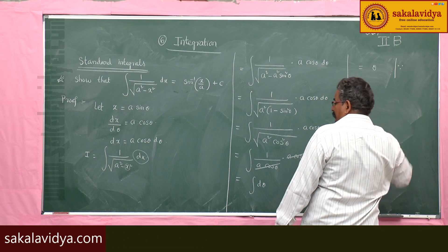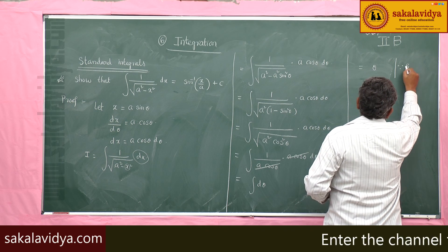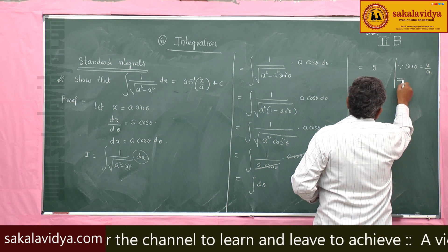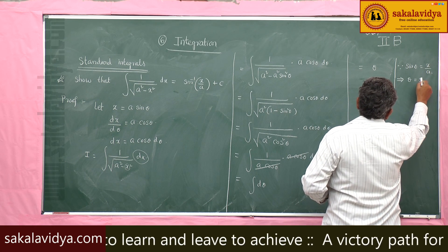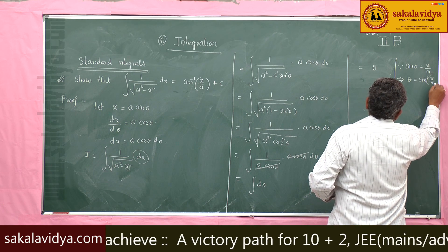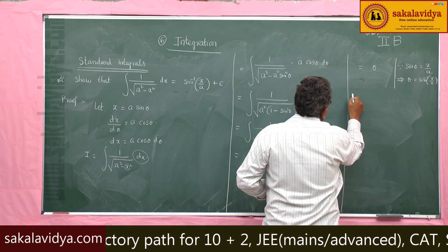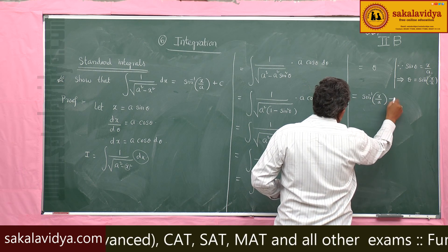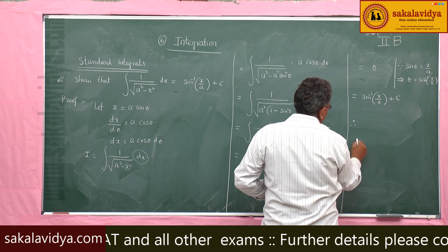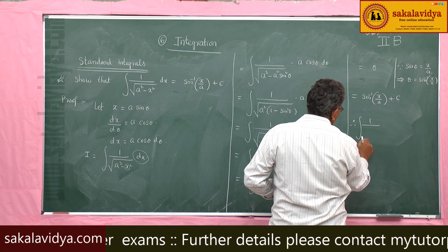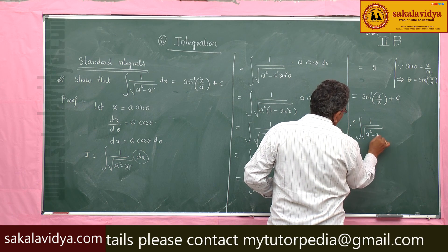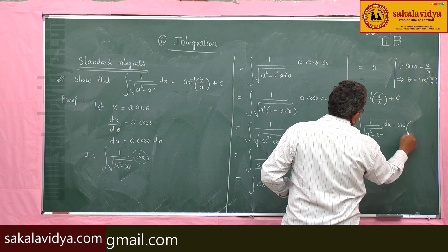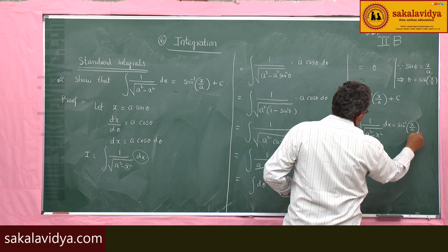Here observe that sin θ equals x/a. From the inverse trigonometric function, θ equals sin⁻¹(x/a). So θ is replaced by sin⁻¹(x/a) plus the constant of integration. Therefore, the integral of 1 divided by √(a² − x²) dx is equal to sin⁻¹(x/a) plus c.